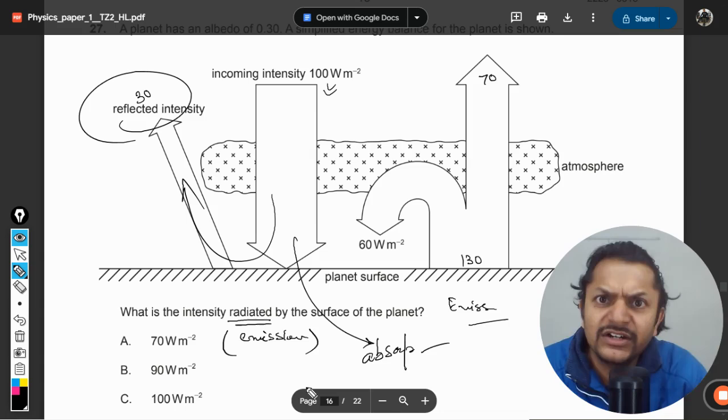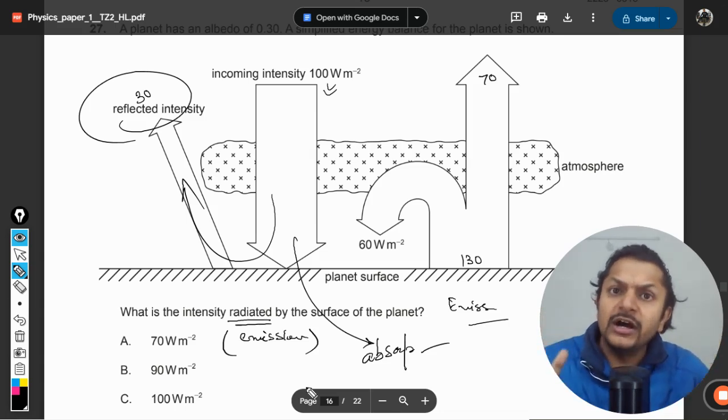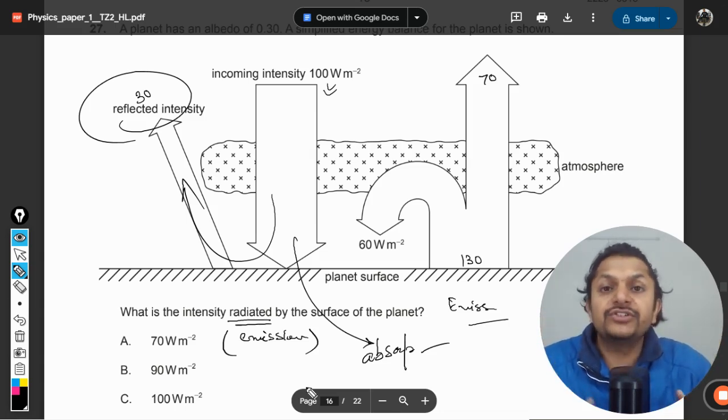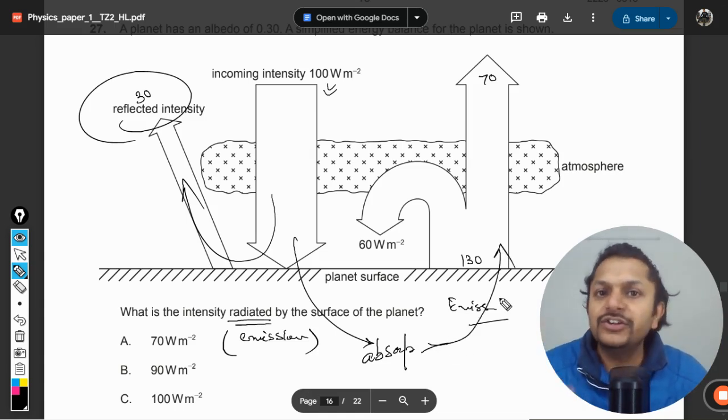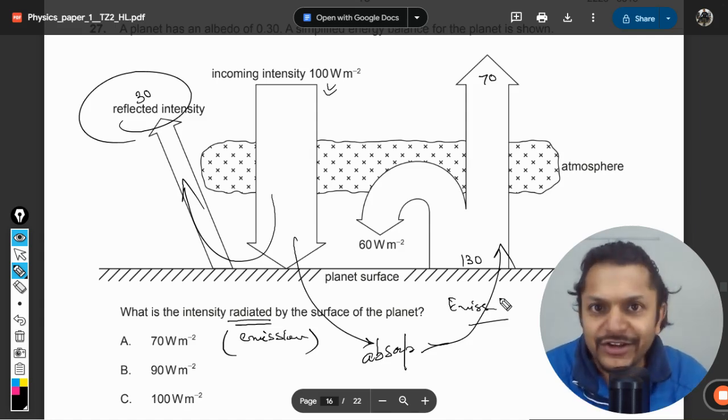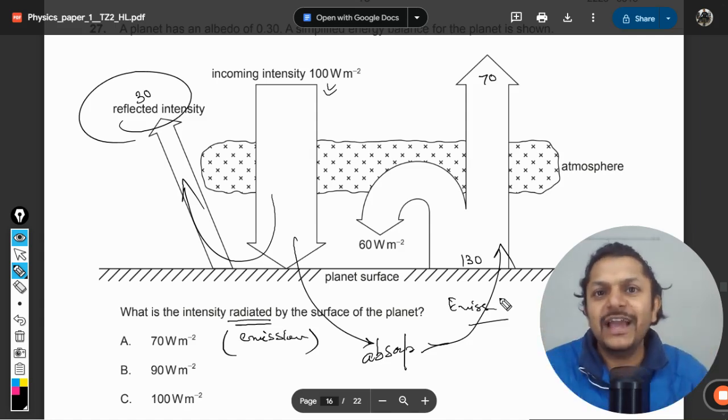For example, we take the case of desert. In a day, the desert's temperature is very high, but at night it is emitting all of the energies, and that is why nights are colder in desert areas. So this is the exact explanation for this question.